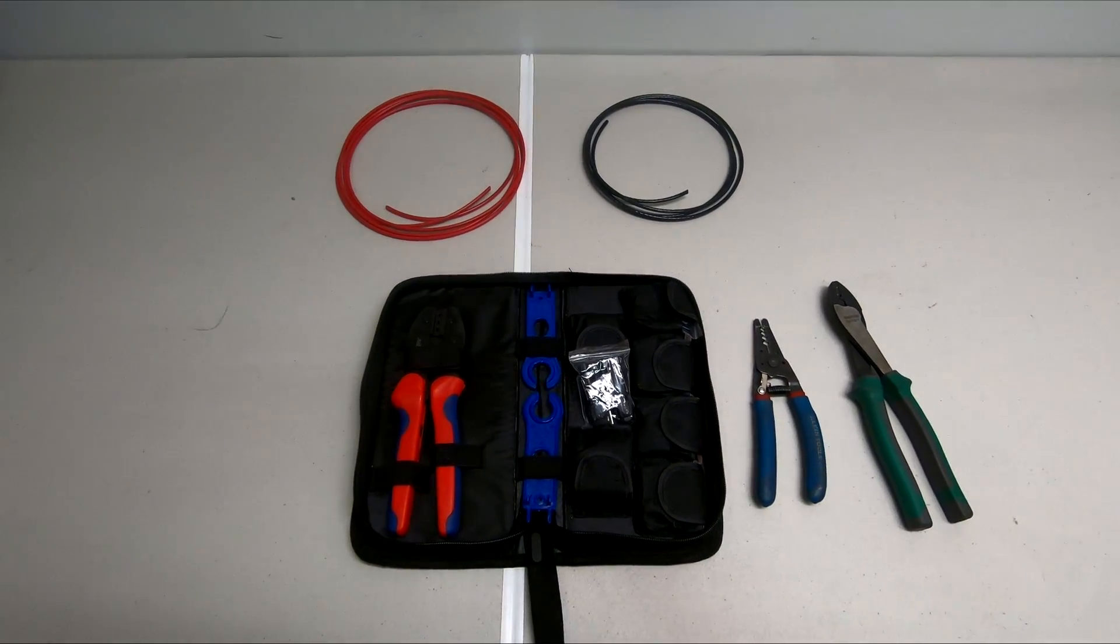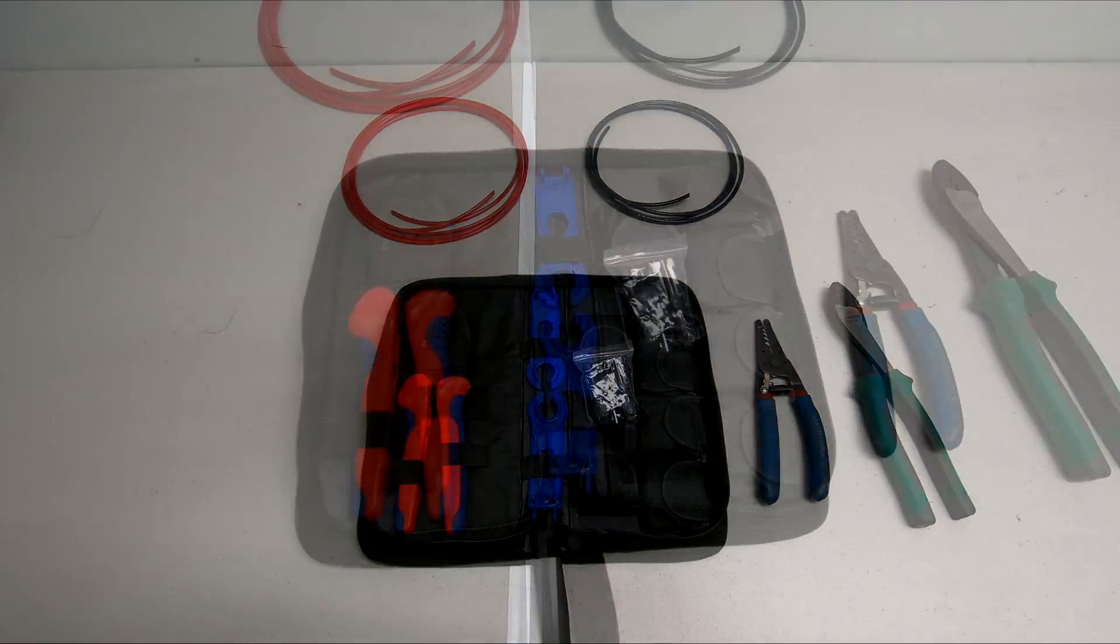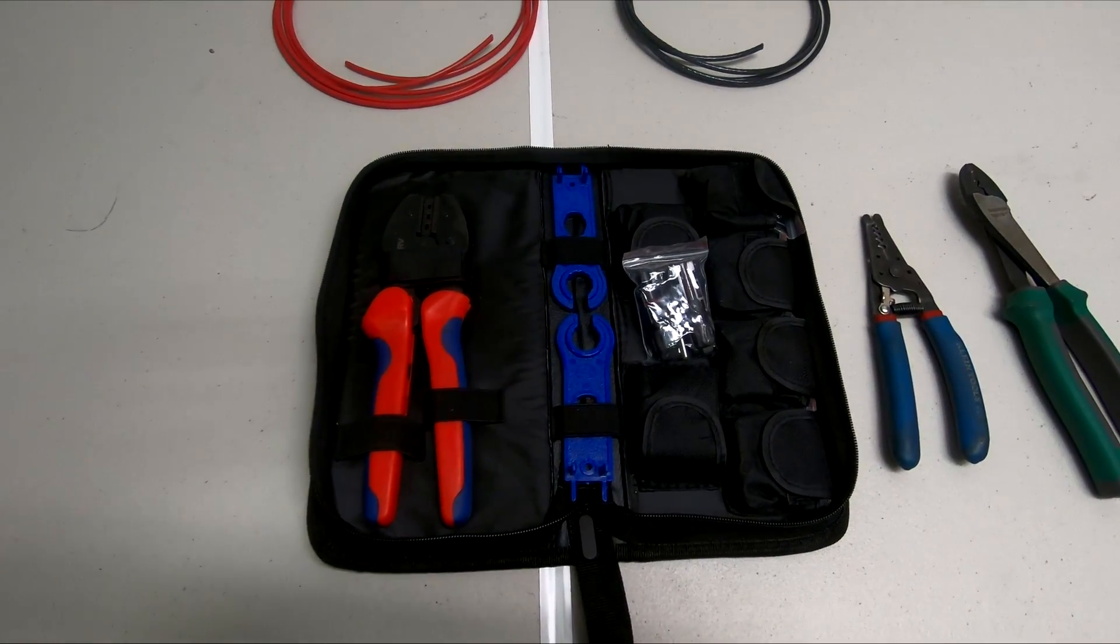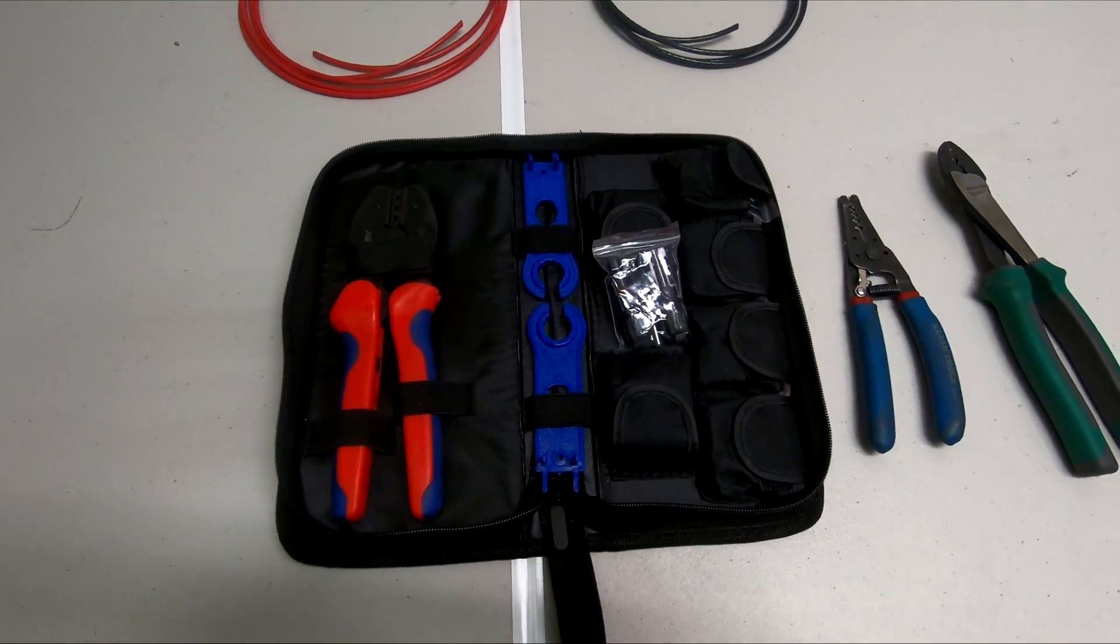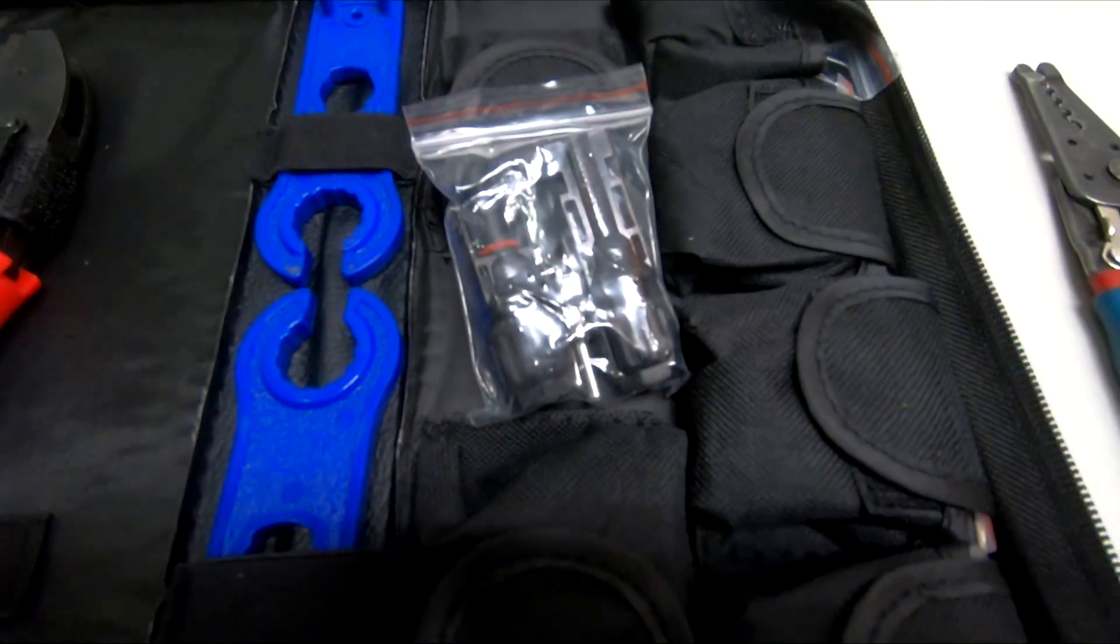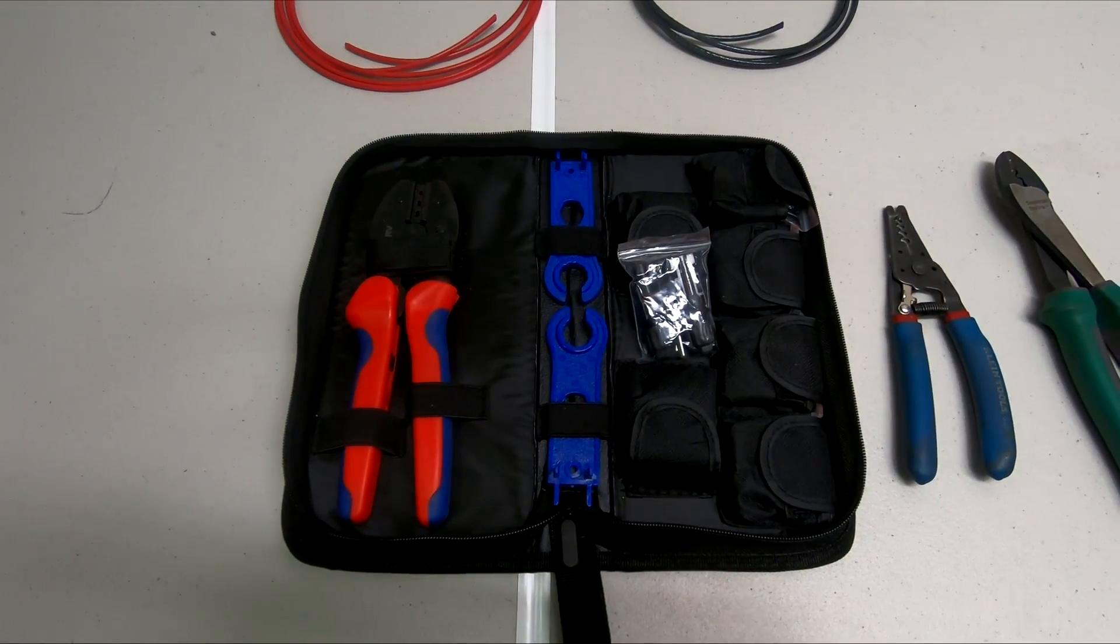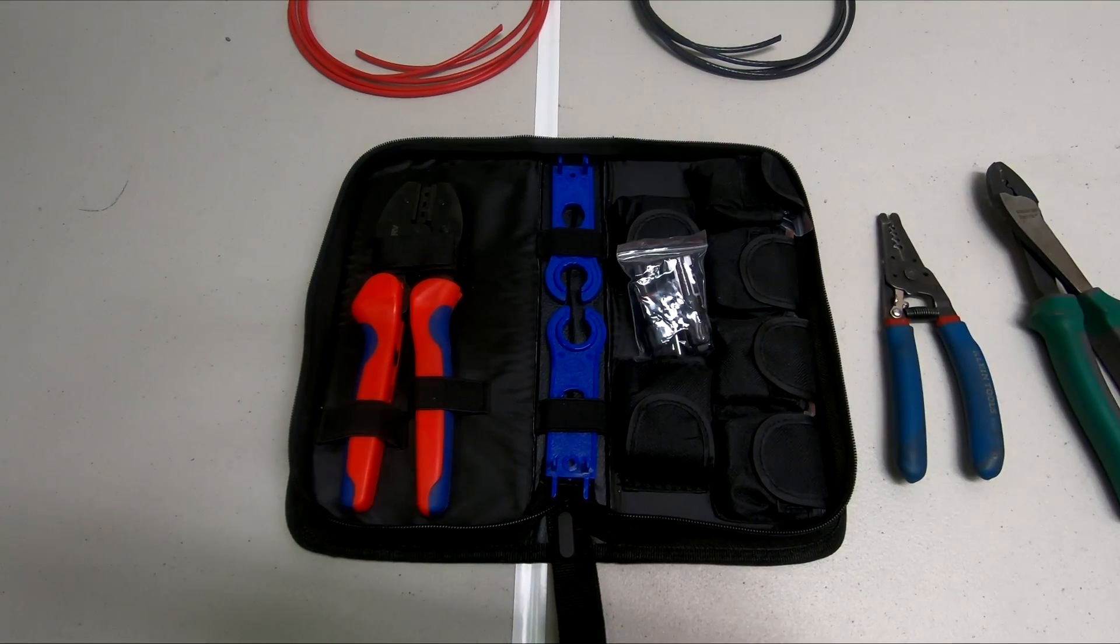In today's video I want to talk about solar MC4 connectors. This kit comes with the crimping tool, the tightening tool, and six pairs of MC4 connectors, kept nicely in a storage pouch for convenient use.